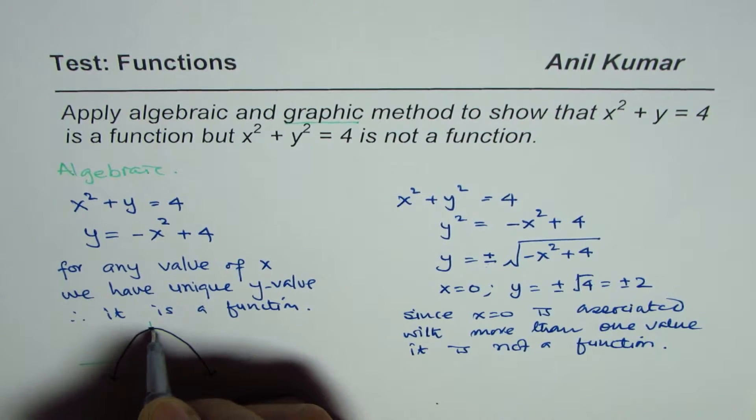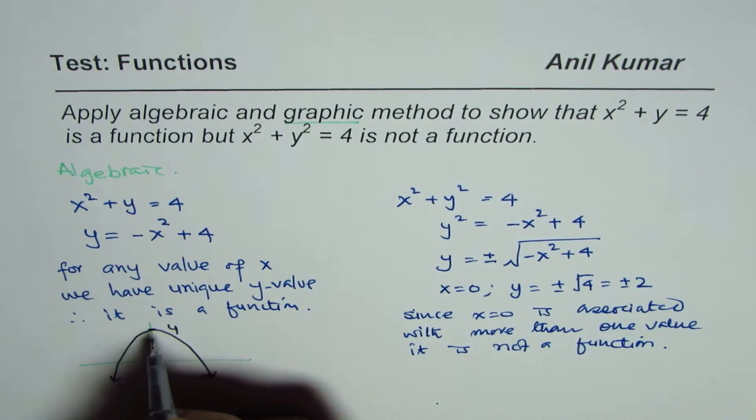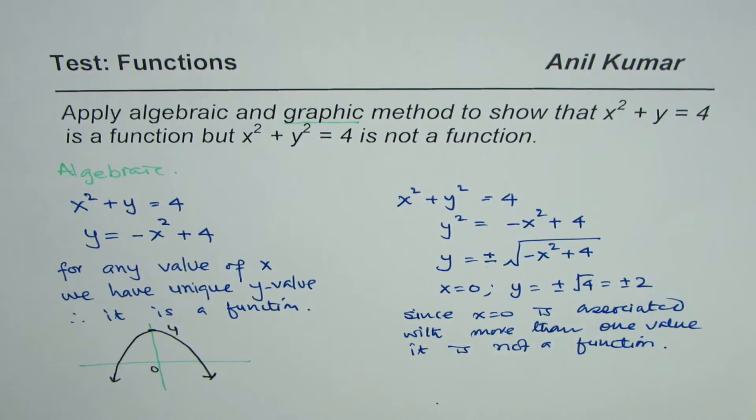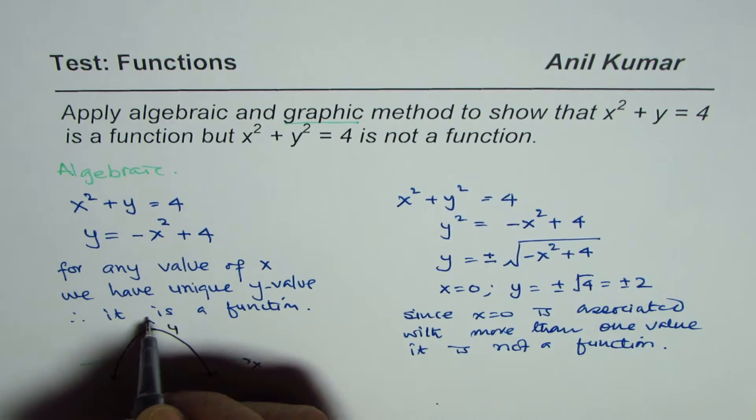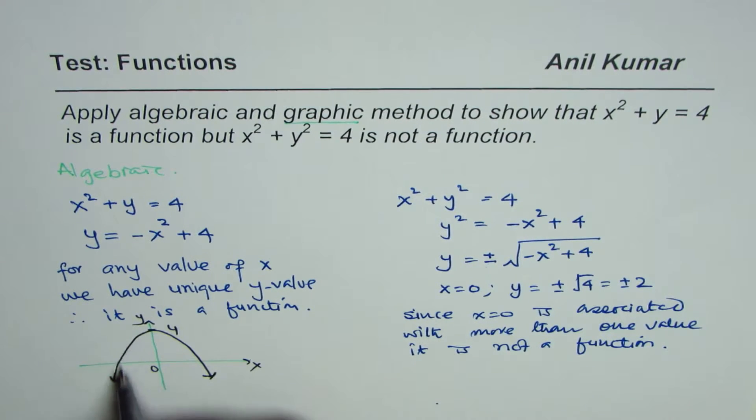with vertex at (0, 4) opening downwards. Now in this graph if you draw a vertical line it is always going to cross at only one point. So it passes vertical line test and therefore it is a function.